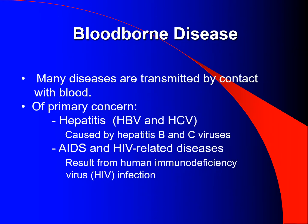Bloodborne diseases. Many diseases are transmitted by contact with blood. Of primary concern: hepatitis, caused by hepatitis B and C viruses; AIDS; and HIV-related diseases, which result from human immunodeficiency virus (HIV) infection.